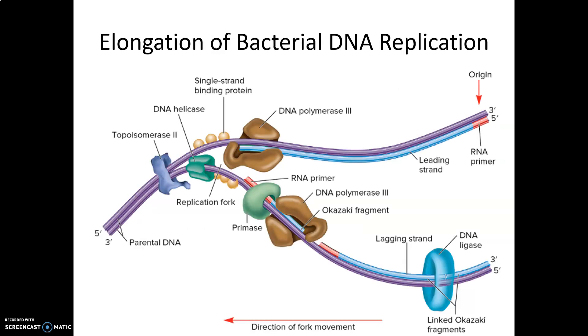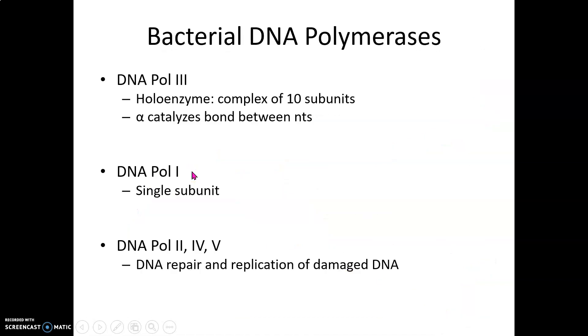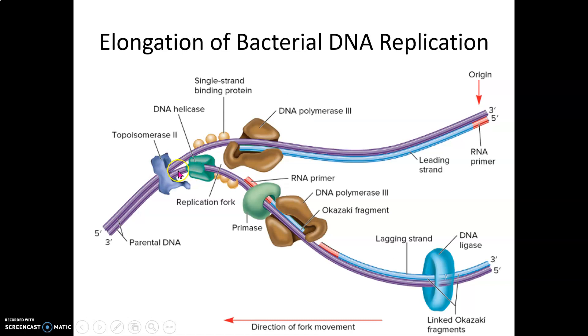During elongation, as the helicase starts to move in the five prime to three prime direction, it unwinds the DNA by breaking the hydrogen bonds. As it does that, it introduces positive supercoils.